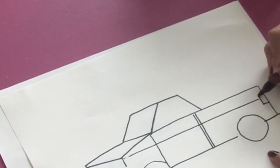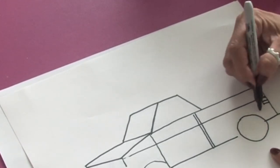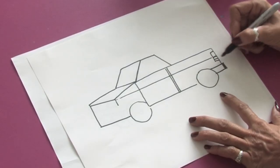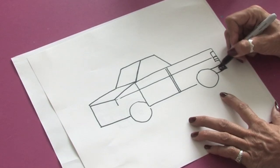In the back here we can add another rectangle to show the tail lights, and another line coming back in here to show the back fender.